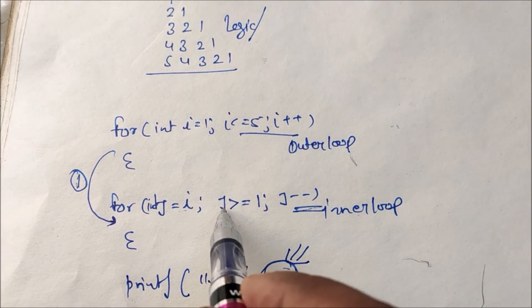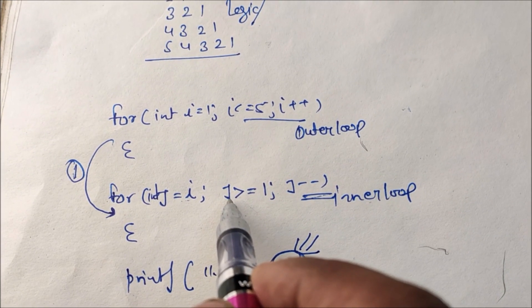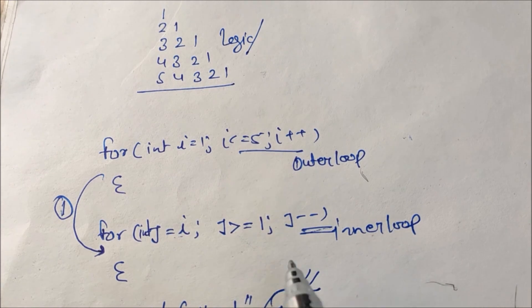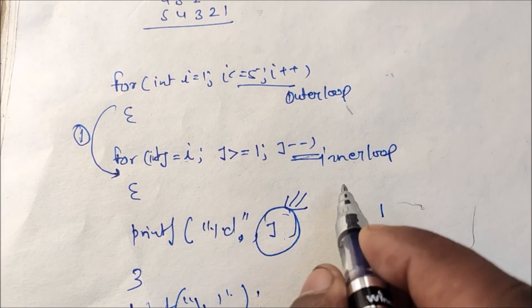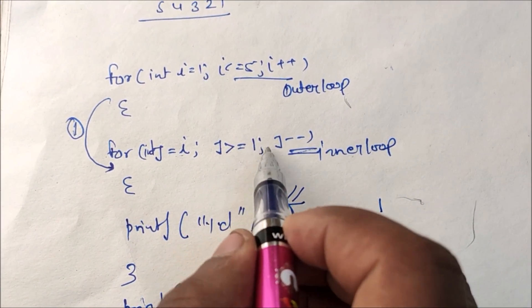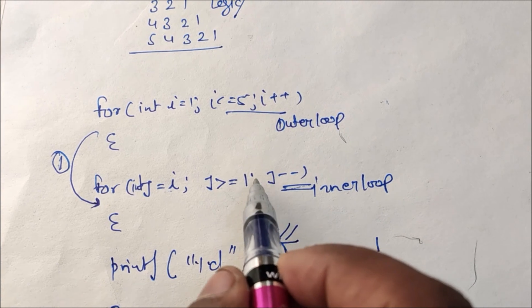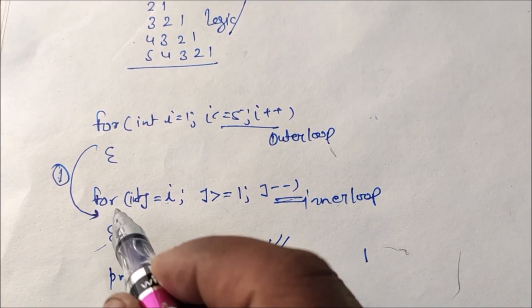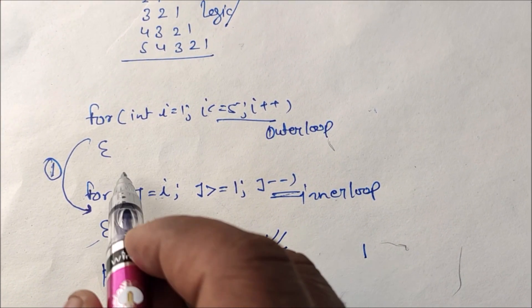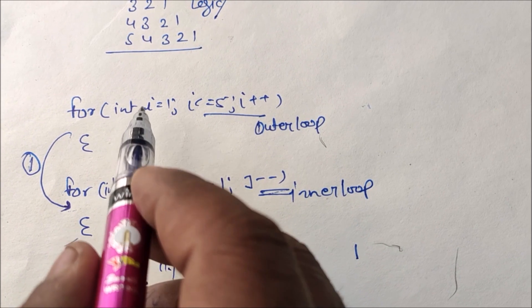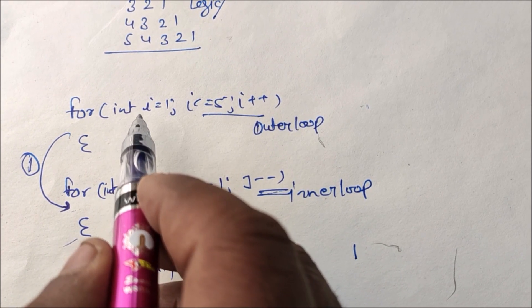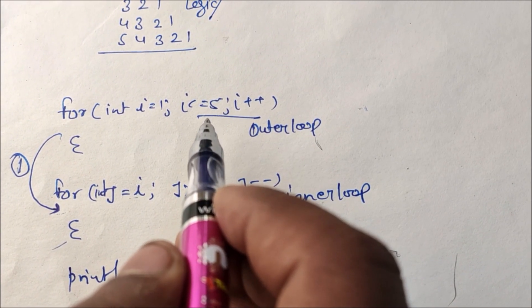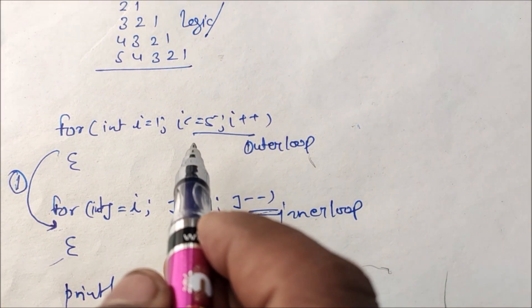When i = 1, we enter the inner loop where j = 1. The condition j >= 1 is true, so we print j value 1. Then j-- makes j = 0, condition becomes false, and we exit the inner loop and go back to the outer loop.